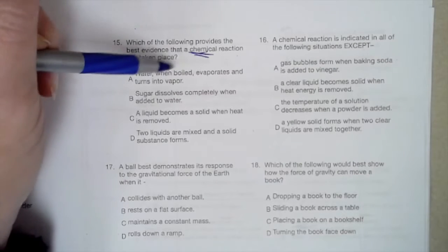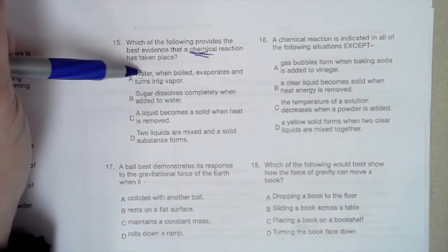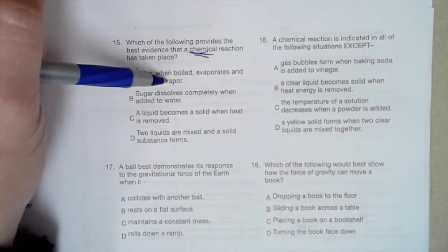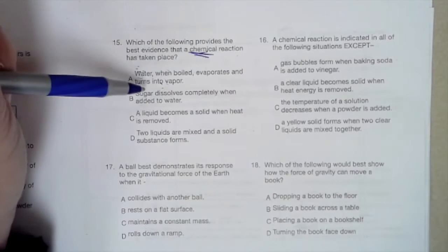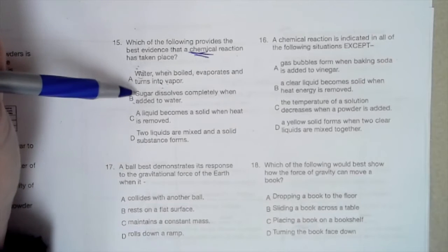Water when boiled evaporates and turns into vapor. Water is a liquid. Vapor is still water, it's just a gas. Still water though. Sugar dissolves completely when added to water. Still sugar and water, they just make a solution.